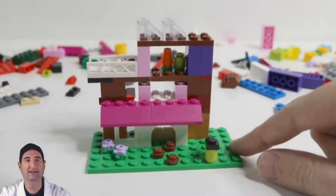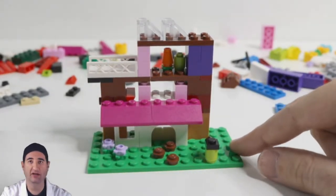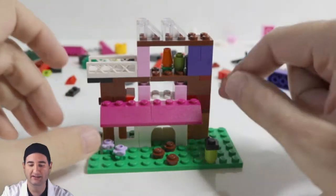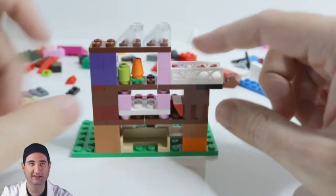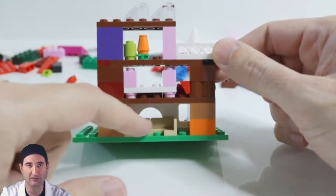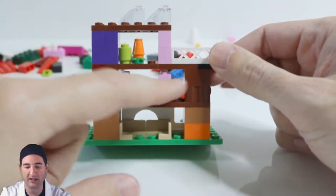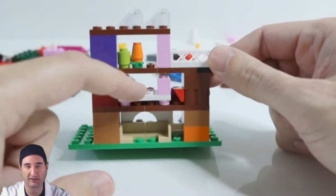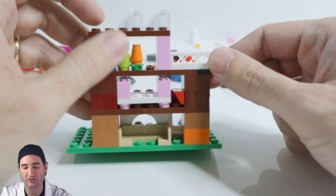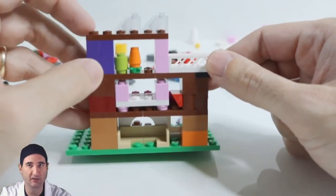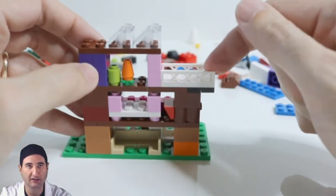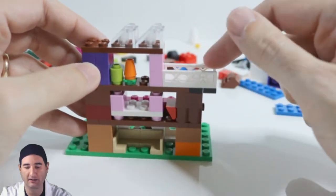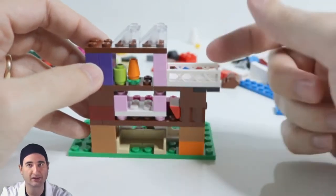So this is a Barbie dream house dollhouse, whatever you want to call it. It's got three floors on the backside. It's got a couch down here, a nice big sectional. It's got a bed with a shelf where you can play with your dolls and have them go to bed. And then you have a little greenhouse up here where you have some plants growing, and then a balcony that you can come out on and view who's here and whatnot.